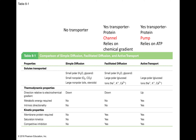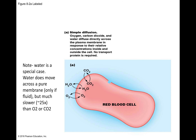Then there's active transport, which relies on pumps and relies on ATP. In active transport, things are going against their concentration gradient — from low to high instead of high to low.